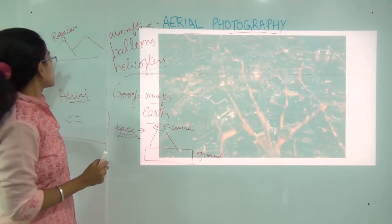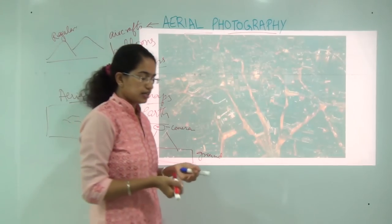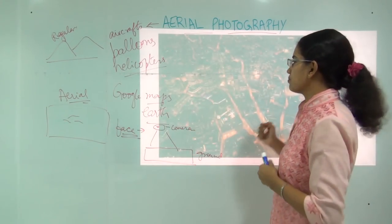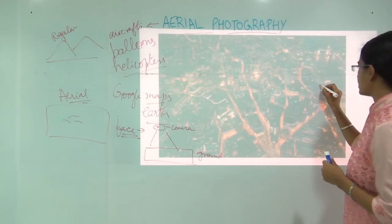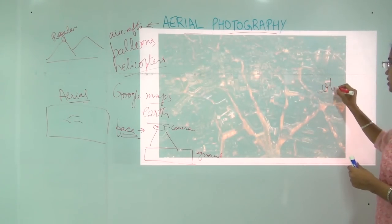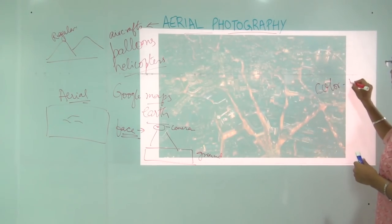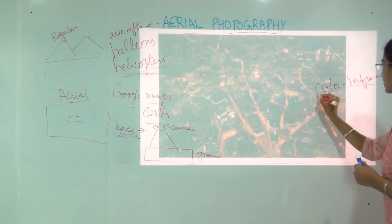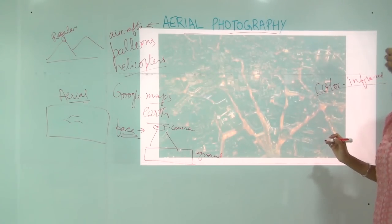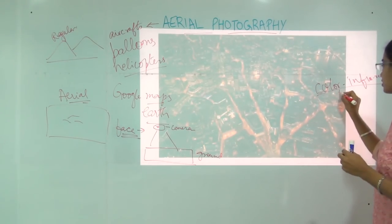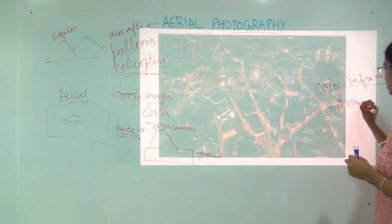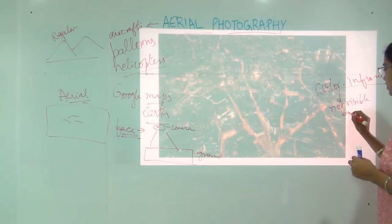We have talked about what regular photography is and what aerial photography is. An important concept in aerial photography is that through it we can capture color infrared photography. This color infrared photography helps us to see things which are not visible to the naked eye.